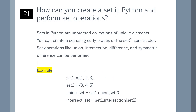How can you create a set in Python and perform set operations? Sets in Python are unordered collections of unique elements. You can create a set using curly braces or the set constructor. Set operations like union, intersection, difference, and symmetric difference can be performed. You can refer to the example shown on the screen.